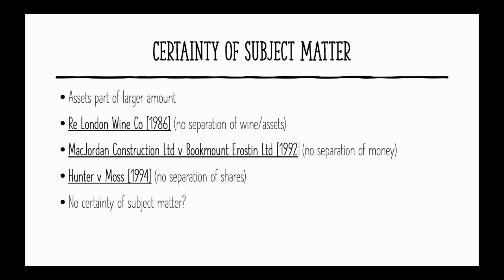Lastly, if there is no certainty of subject matter, the trust will simply fail. When the trust fails, the property returns to the settlor or their estate. If it is a testamentary trust, it will go on a resulting trust back to the estate or to the settlor.